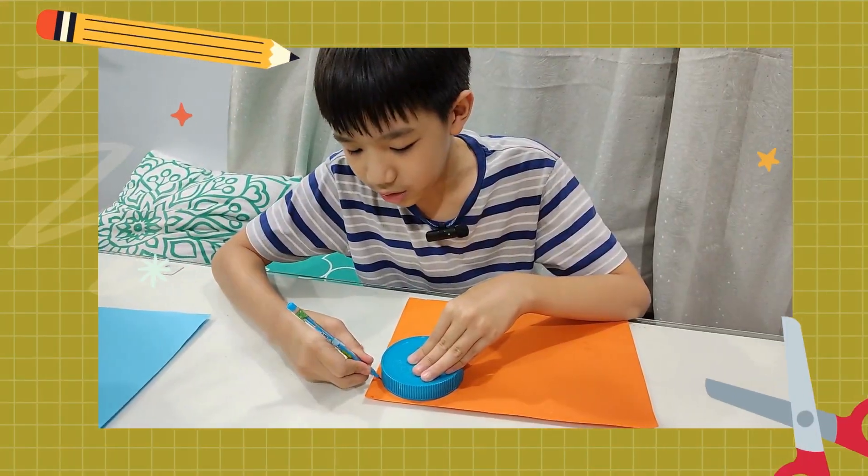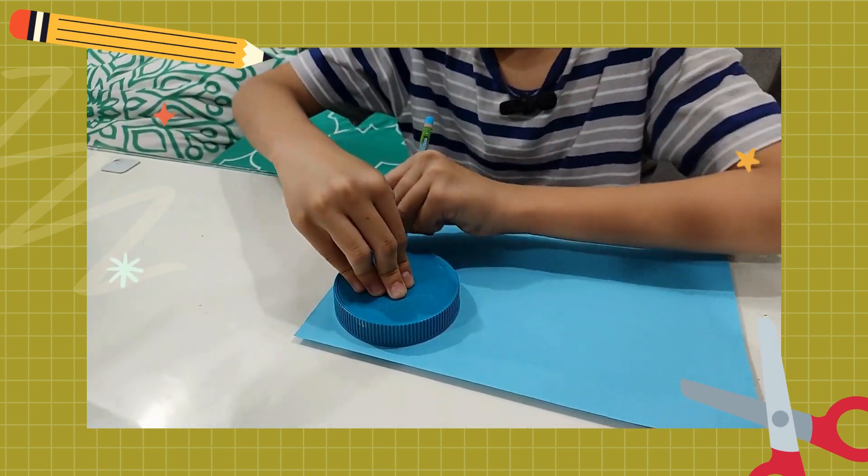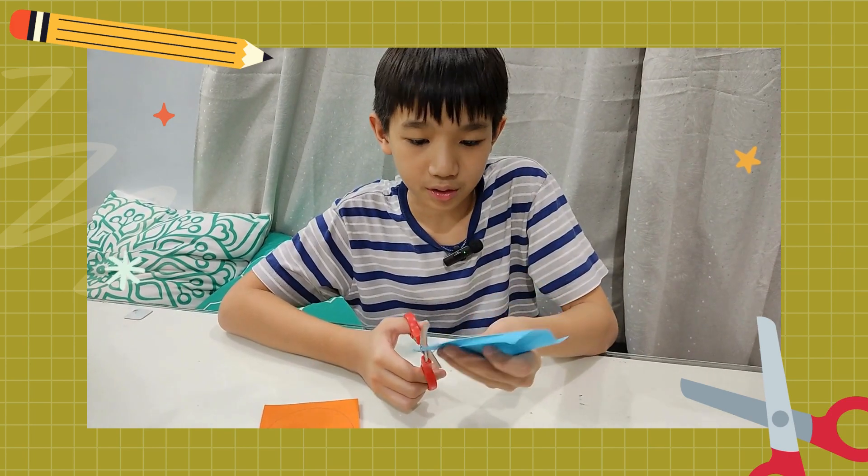Trace the smaller circle on each colored paper. Cut both circles out.